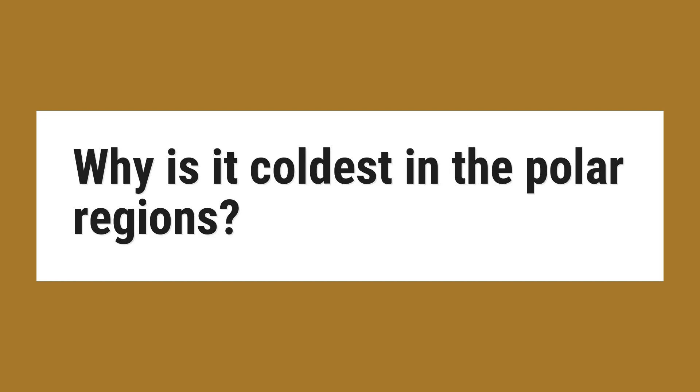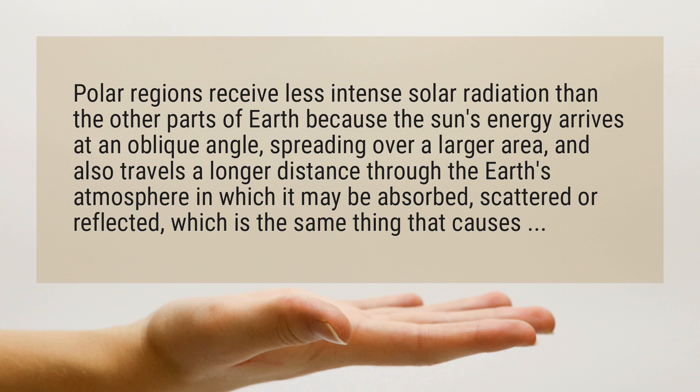Why is it coldest in the polar regions? Polar regions receive less intense solar radiation than other parts of Earth because the sun's energy arrives at an oblique angle, spreading over a larger area, and also travels a longer distance through the Earth's atmosphere, in which it may be absorbed, scattered, or reflected.